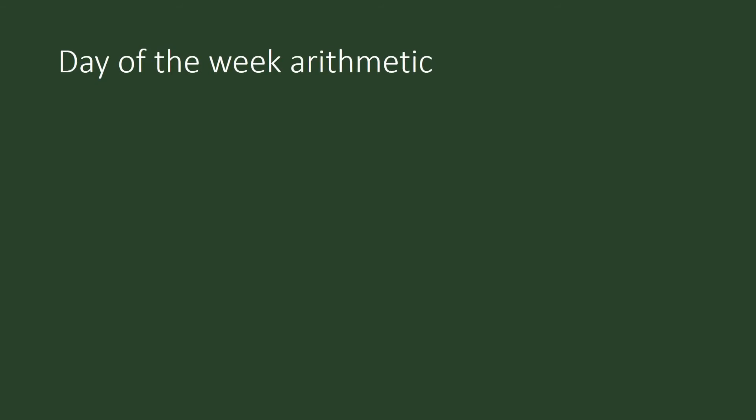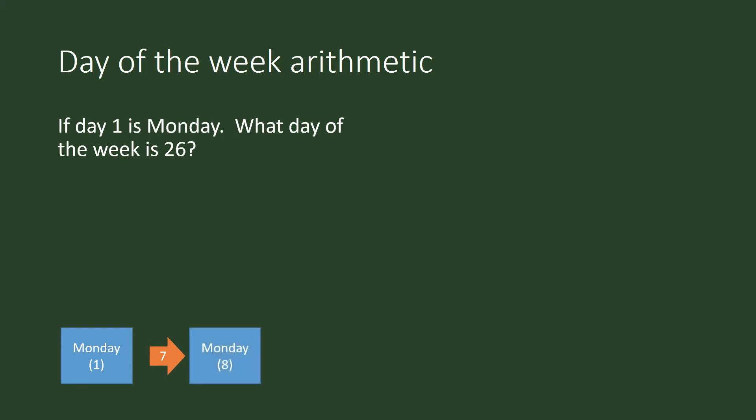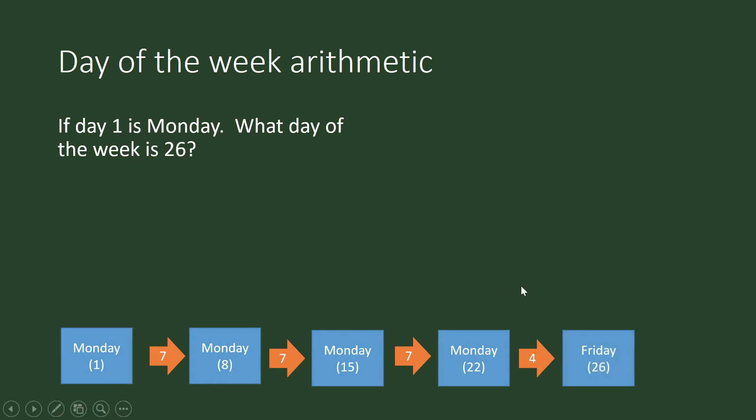So let us apply modulo n arithmetic to some problems connected with knowing the days of the week. If day 1 is Monday, what day of the week is day 26? If we don't know modulo n arithmetic, this is how I will do it. Starting from Monday, I will add 7 days. And after 7 days, it's going to be Monday again. I will add another 7 days, another 7 days. It's going to be Monday again, but it's going to be day 22. So to get to day 26, I will just add 4 more days. And obviously, it's going to be Friday.